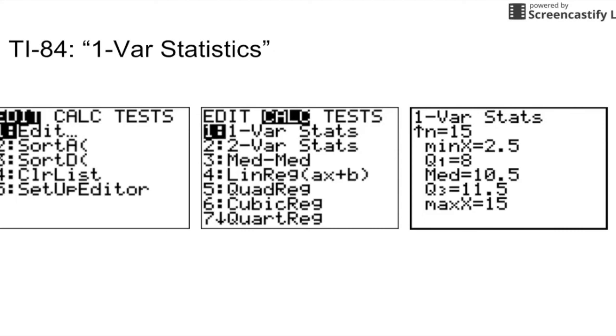To find 1-var stats on the TI-84 graphing calculator, first press STAT. Then, select the CALC menu and select 1-var stats. You will be given a list of different outputs such as mean and standard deviation.